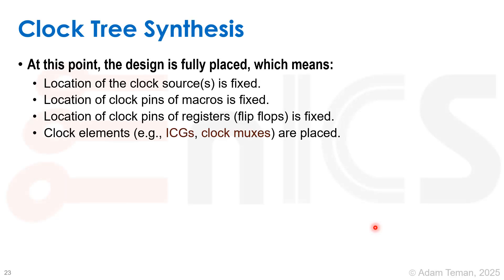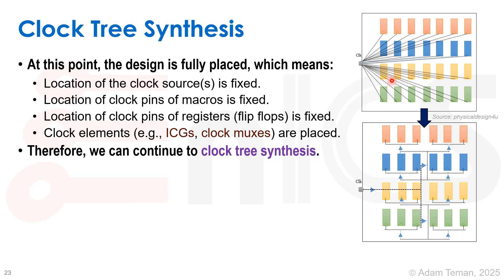Our next step is clock tree synthesis. At this point the design is fully placed, meaning the location of the clock sources is fixed, the location of the clock pins of the macros is fixed, the location of the clock pins of the registers is fixed, and the clock elements like the ICGs and clock muxes are placed. So we know where the clock has to go, where it comes from, and all the places it needs to reach — therefore we can proceed to clock tree synthesis.